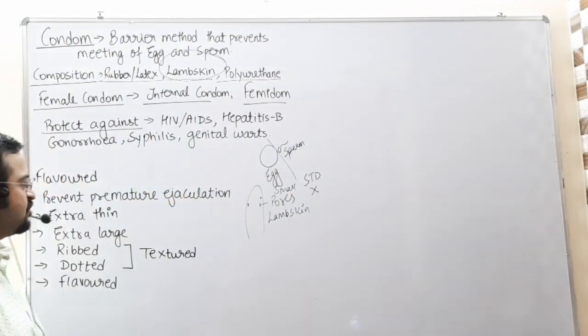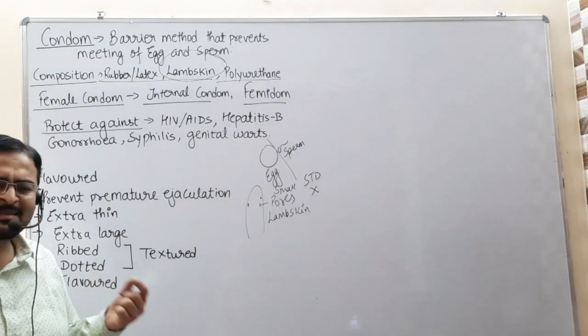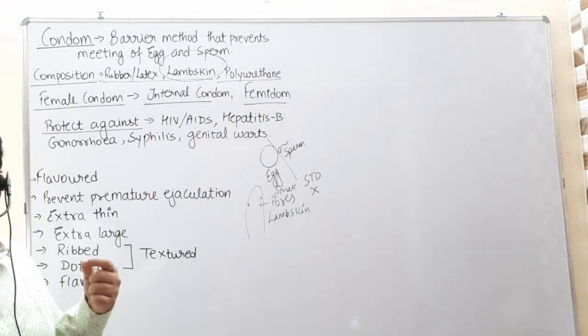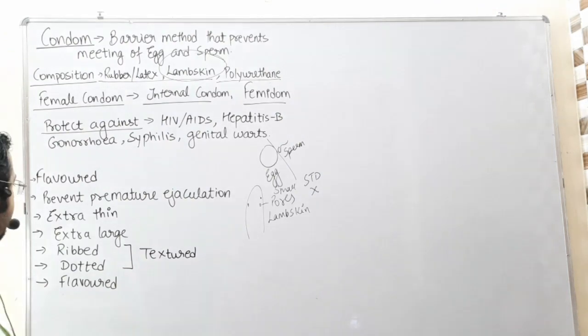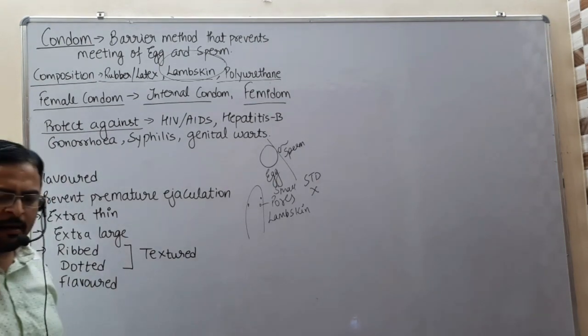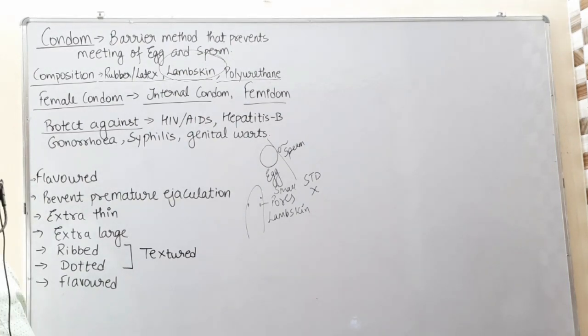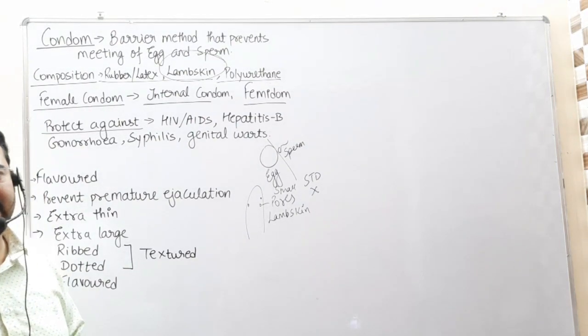Generally we see that condoms are flavored. These condoms contain particular scents, and there are special type of condoms which prevent premature ejaculation. Such type of condoms are easily available in market.